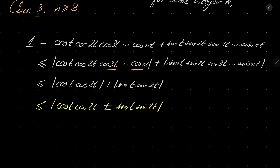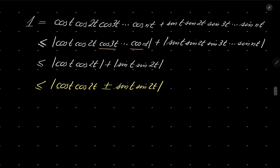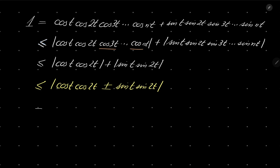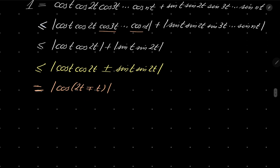For example, when the sine product is positive we choose plus, and when it's negative we choose minus — canceling the double negative. So this inequality is definitely true. Now, by using our cosine addition identity, the right-hand side equals the absolute value of cosine of 2t minus or plus t, which is either absolute value of cosine of t or absolute value of cosine of 3t. Let's consider these two cases separately.